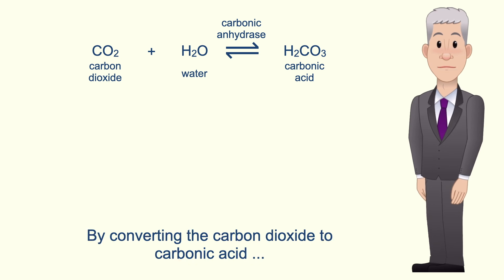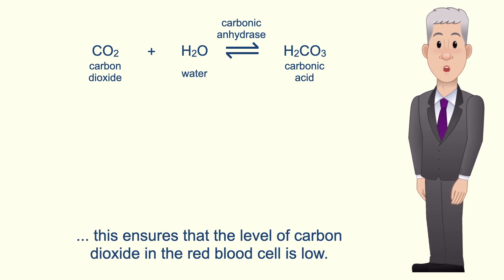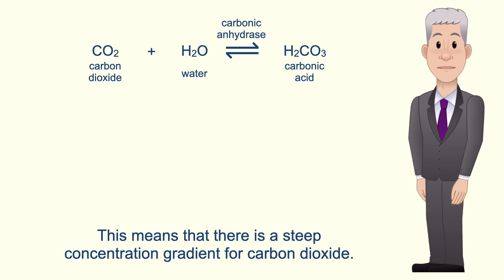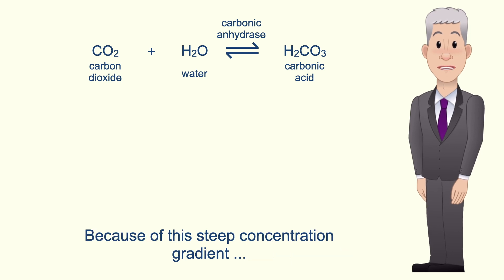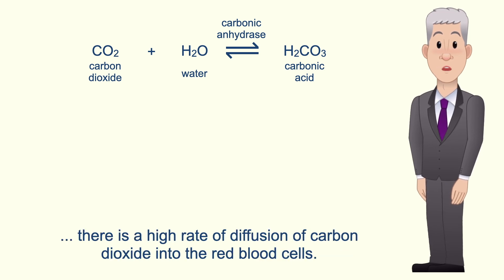By converting the carbon dioxide to carbonic acid, this ensures that the level of carbon dioxide in the red blood cell is low. This means that there's a steep concentration gradient for carbon dioxide, and because of this steep concentration gradient there's a high rate of diffusion of carbon dioxide into the red blood cells.